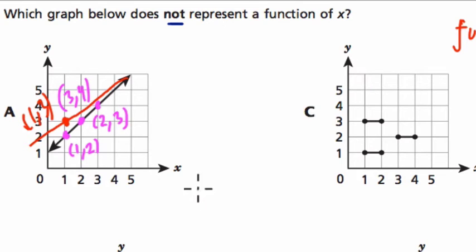And essentially, because we're basing our function based on x, it says a function of x, that means x is our input. If it's a function of y, that might reverse things, and y would be the input, and x would be the output. But they're specifying that x is the input.